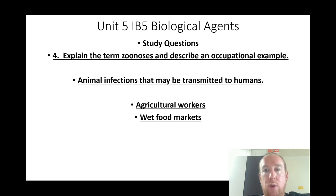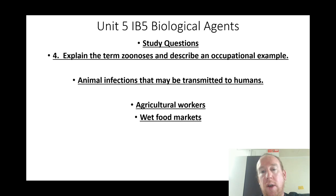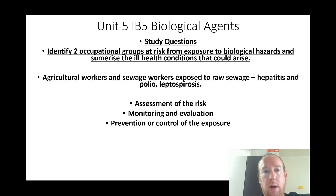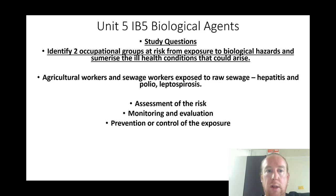Explain the term zoonosis and describe an occupational example: animal infections that may be transmitted to humans — examples include agricultural workers and wet food market workers. Identify two occupational groups at risk from exposure to biological hazards: agricultural workers and sewage workers, exposed to raw sewage, hepatitis, polio, and leptospirosis.